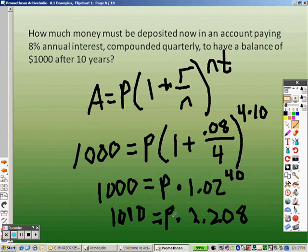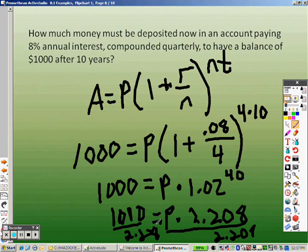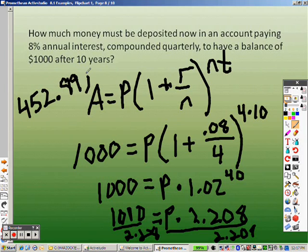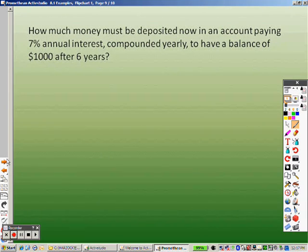To get P by itself, it's P times that, so I need to divide both sides by the 2.208 on both sides. 2.208. So, 1,000 divided by 2.208, and we end up getting $452.89, is how much was put in, because we're working that problem backwards to figure out how much money was deposited.